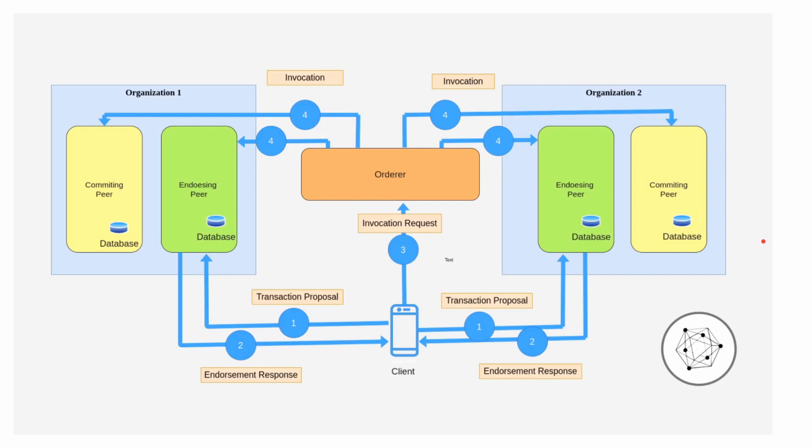Hello everyone, welcome to the new video. In the previous videos we learned how to create networks, creating channels, installing chaincode, instantiating chaincode, invoking transactions, and querying transactions. All of those things we did through the command line interface. In this video we are going to start creating the API using Fabric SDKs.